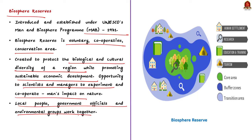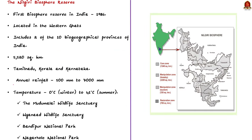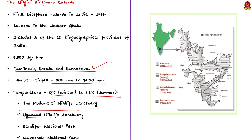The two main biosphere reserves in Kerala are the Nilgiri Biosphere Reserve and Agasthiamalai Biosphere Reserve. The Nilgiri Biosphere Reserve was the first biosphere reserve in India, established in 1986. Located in the Western Ghats, it includes two of the ten biogeographical provinces of India, covering a total area of about 5,520 sq. km., spanning parts of Tamil Nadu, Kerala, and Karnataka. Annual rainfall ranges from 500 mm to 7,000 mm, with temperatures from 0°C in winter to 41°C in summer. It falls under the biogeographical region of Malabar Rainforest. Protected areas within it include Mudumalai Wildlife Sanctuary, Wayanad Wildlife Sanctuary, Bandipur National Park, Nagarhole National Park, Mukurthi National Park, and Silent Valley.